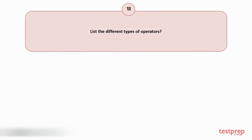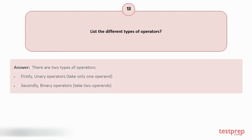Question number 13: List the different types of operators? There are two types of operators. First, unary operators, which take only one operand. Second, binary operators, which take two operands.